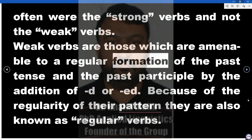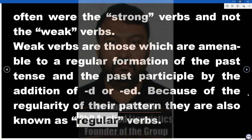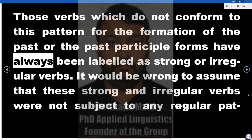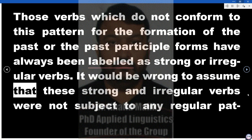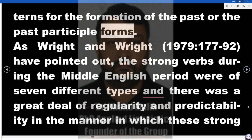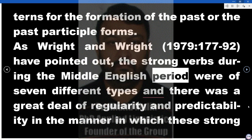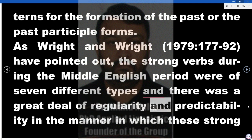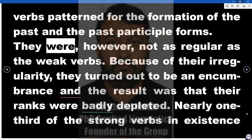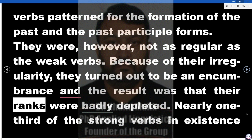Weak verbs are those which are amenable to a regular formation of the past tense and past participle by the addition of -d or -ed. Because of the regularity of their pattern they are also known as regular verbs. Those verbs which do not conform to this pattern have always been labelled as strong or irregular verbs. It would be wrong to assume that these strong verbs were not subject to any regular patterns. As Wright and Wright (1979: 177-92) have pointed out, the strong verbs during the Middle English period were of seven different types, and there was a great deal of regularity and predictability in the manner in which these strong verbs patterned for the formation of the past and the past participle forms.